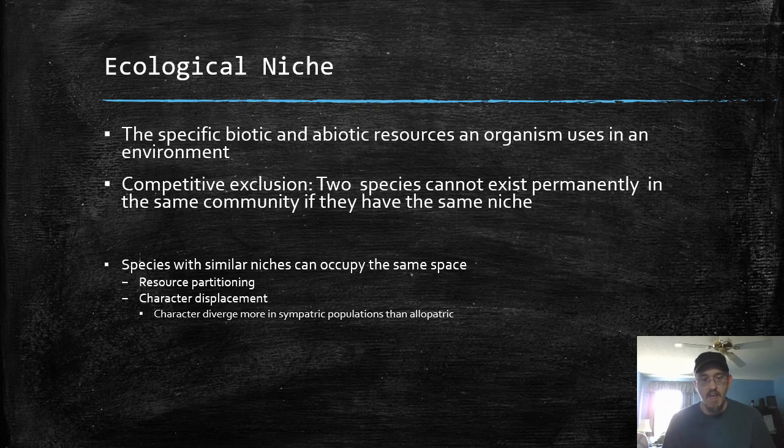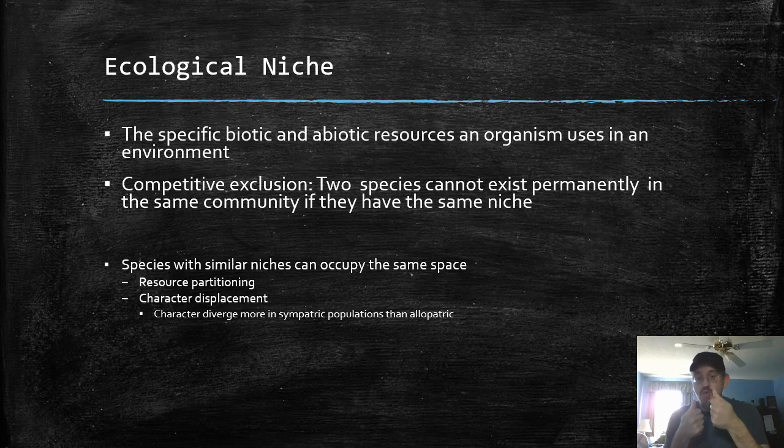The other thing that happens is character displacement. This is more evolution — this is when characters diverge in sympatric populations more than in allopatric populations. Sympatric means in the same place. So you have two critters in the same place competing for resources, then they may diverge quite a bit. I have a figure for this in the next video — I didn't stick it into this PowerPoint, so it'll be in the next video.